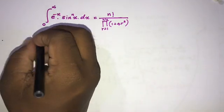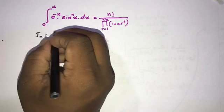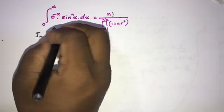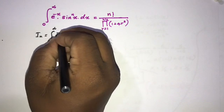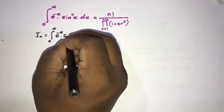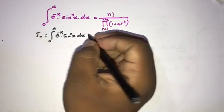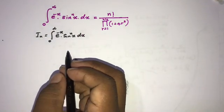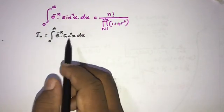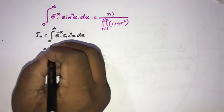First, I am going to define I_n as equal to this integral from zero to infinity of e to the minus x times sine to the n of x dx. Now we can evaluate I_n by using the integration by parts method.